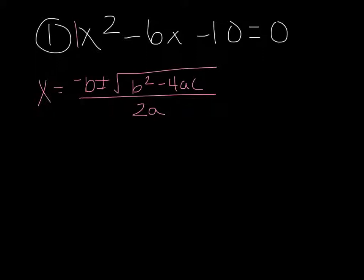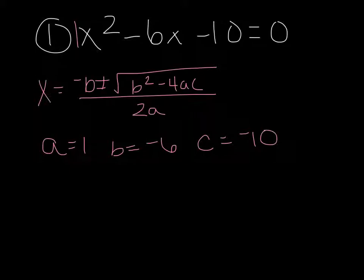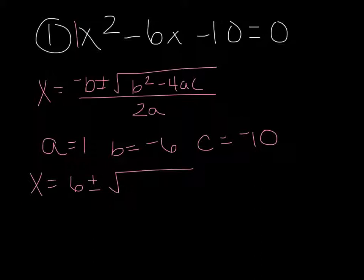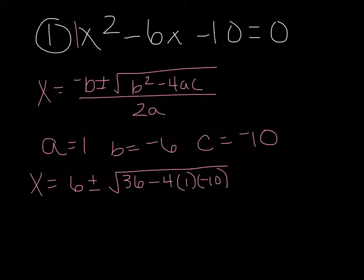a is going to be the number out front, so it's just 1 — a equals 1. b is negative 6, and c is going to be negative 10. Those numbers came from before the x squared, before the x, and then just a single number. So we're going to plug into our quadratic formula: x equals negative b, which is positive 6, plus or minus the square root. b squared — negative 6 squared gives you positive 36; b squared will always be positive — minus 4 times a times c, so parentheses 1, parentheses negative 10. All divided by 2a, so 2 times 1 gives you 2.